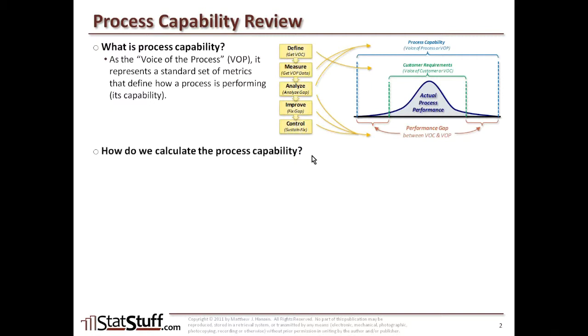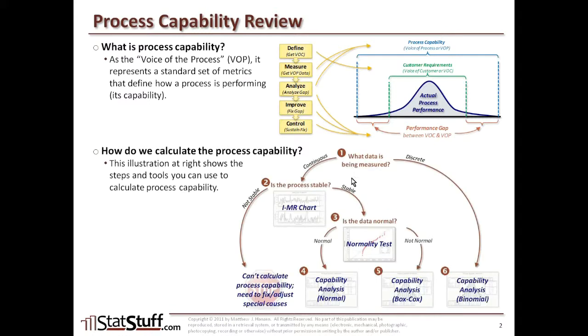Now, how do we calculate the actual process capability? Here's the illustration we've used before to show how we would drill down to figure out the process capability. It starts with the first question: we need to understand what data is that we're measuring. Based on the type of data, for example, if it's continuous data, the next question is, is the process stable? We might use an IMR chart to figure that out. If the process is not stable, then we really can't calculate the process capability. There's probably some special causes within our data that we need to fix and remove those special causes so that we can get the process to some stable point where we can trust whether it's really stable or not and then begin to assess the capability of that process.